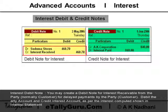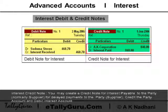Interest credit note: you may create a credit note for interest payable to the party — normally a supplier — for delayed payments to the supplier. Credit the party account and debit the interest account.